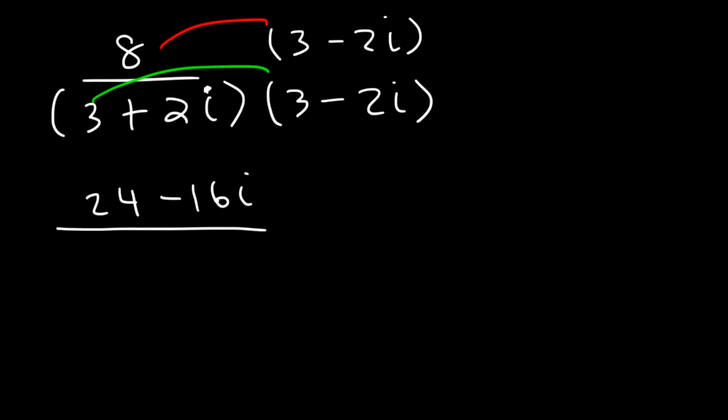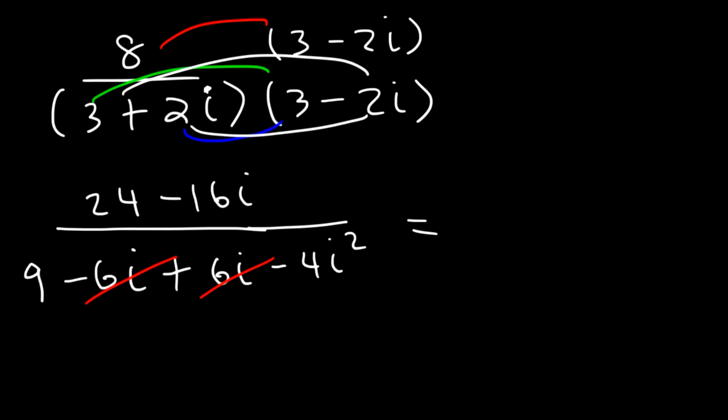3 times 3 is 9. 3 times negative 2i is negative 6i. And then 2i times 3, that's positive 6i. And then 2i times negative 2i is negative 4i squared. Now the two middle terms add up to 0. And so it's 24 minus 16i.